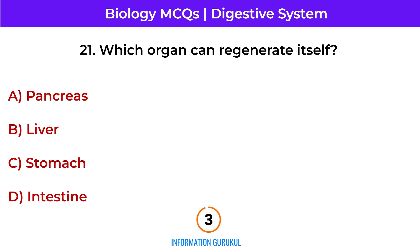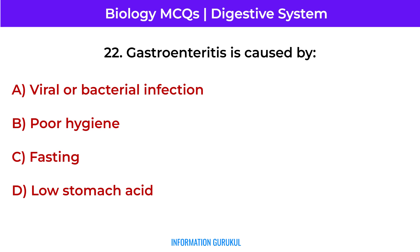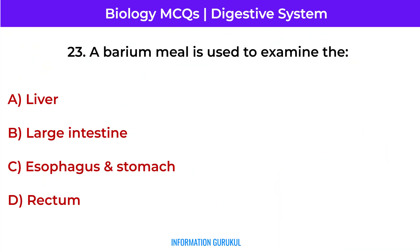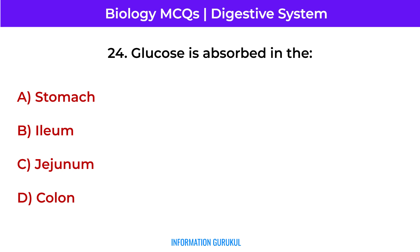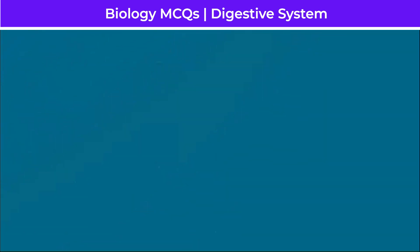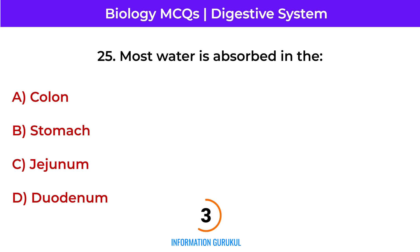Which organ can regenerate itself? The liver. Gastroenteritis is caused by viral or bacterial infection. Glucose is absorbed in the jejunum. Most water is absorbed in the colon.